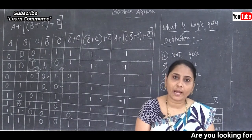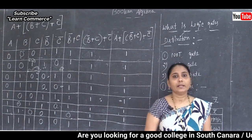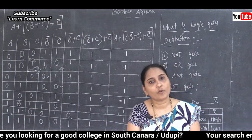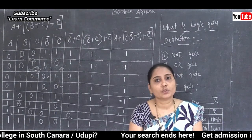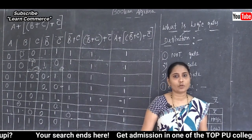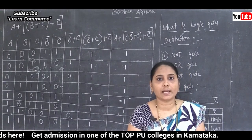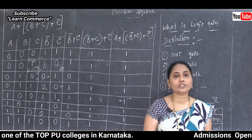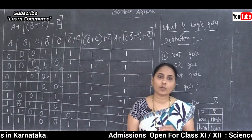We know that depending on the variables, we create the truth table. For three variables, the first column is 4-0-4-1, the second column is 2-0-2-1, and the third column is 0-1-0-1. For two variables, the column values are 2-0-2-1 and 0-1-0-1.